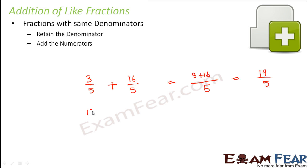Let us take one more example 13/101 plus 5/101. So how do we add these 2? So denominator remains the same add the numerators. So 13 plus 5 is 18 divided by 101. So in this fashion we can add the like fractions.